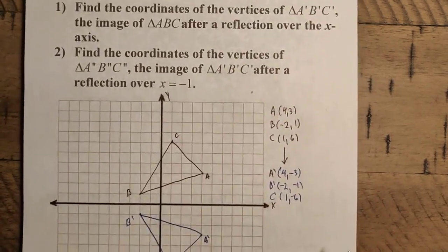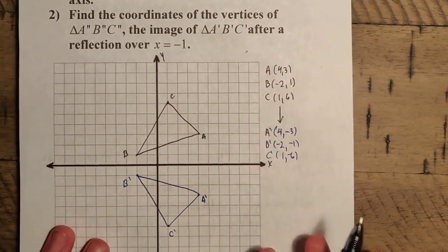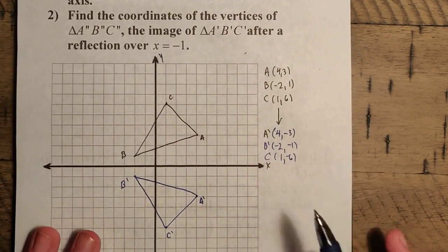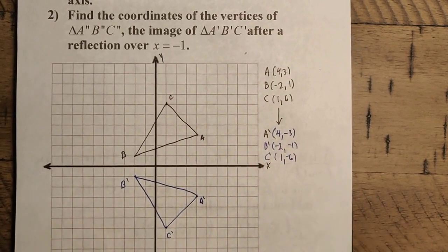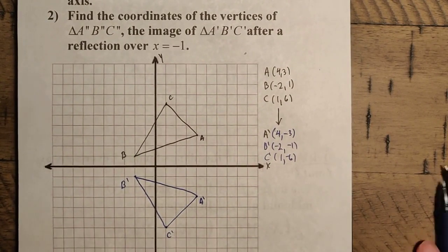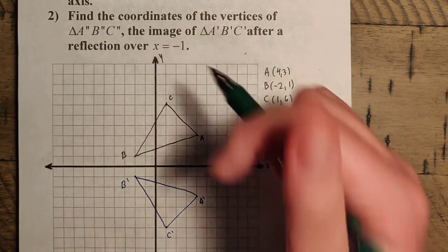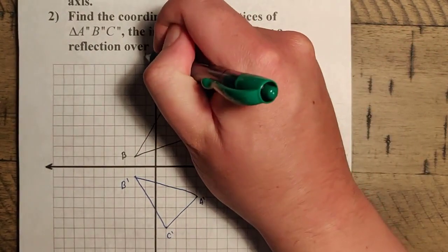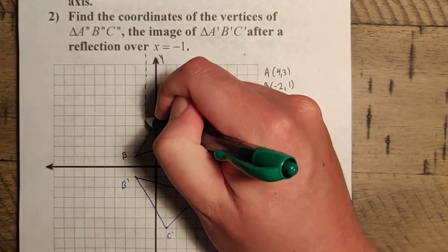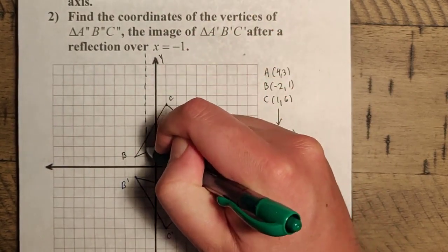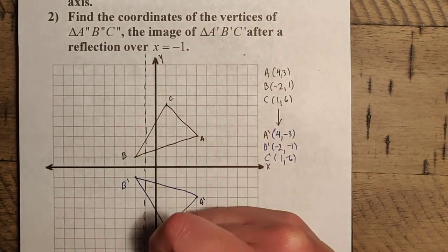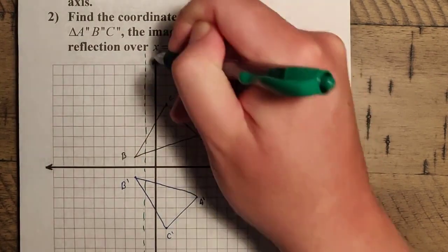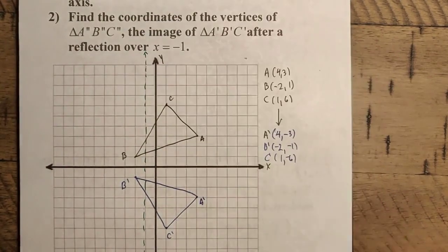Now we want to find the coordinates of the vertices of A'', B'', C'' — the image after a reflection over the line x equals negative 1. Remember that x equals negative 1 is a vertical line, parallel to the y-axis. That's this green line here.